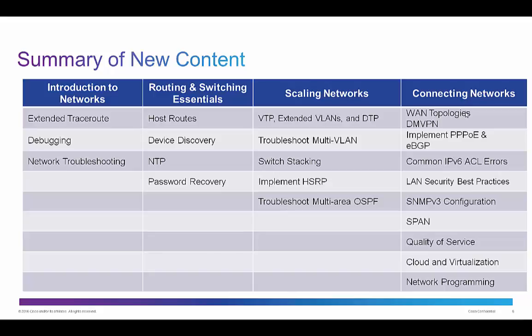For Connecting Networks, we're looking at WAN topologies, some DMVPN, and implementing PPPoE — we talk about PPPoE as an overview, but now we're going to look at implementing it. There's additional new content here for EBGP, some common IPv6 ACL errors and troubleshooting, LAN security best practices, SNMPv3 configuration, SPAN, Quality of Service, cloud and virtualization, and network programming.